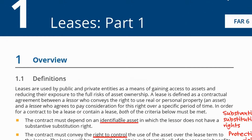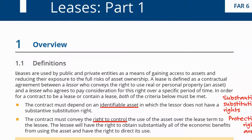Leases are used by public and private entities as a means of gaining access to assets and reducing their exposure to the risks of asset ownership. So instead of having to pay large amounts to own an asset — say a building — a lease is a sort of agreement that gives you access to this building without having to actually purchase it and assume all the risks of ownership.